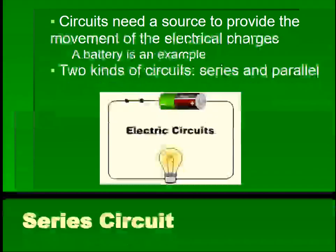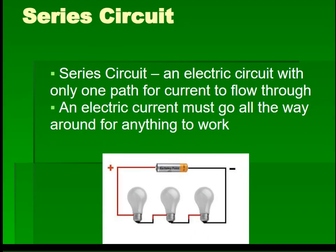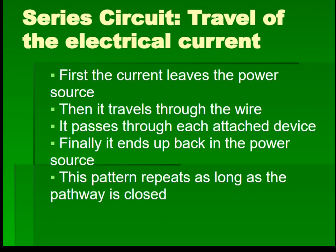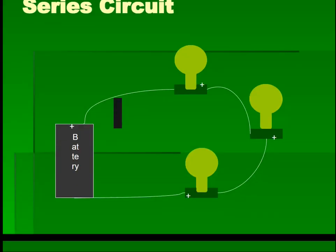There are two kinds of circuits: series and parallel. A series circuit is an electric circuit with only one path for current to flow through. An electric current must go all the way around for anything to work. The current leaves the power source, travels through the wire, passes through each attached device, and finally ends up back in the power source. This pattern repeats as long as the pathway is closed.